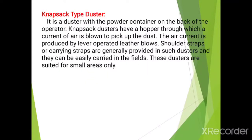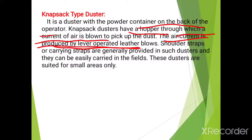The next type is the knapsack type duster. It is a duster with a powder container on the back of the operator. These dusters have a hopper through which a current of air is blown to pick up the dust. The air current is produced by lever-operated leather bellows. Shoulder straps or carrying straps are generally provided, similar to the knapsack sprayer. They can be easily carried in the field and are suited for small areas.